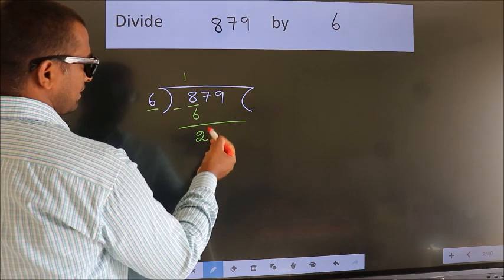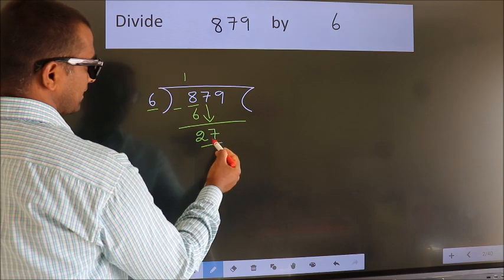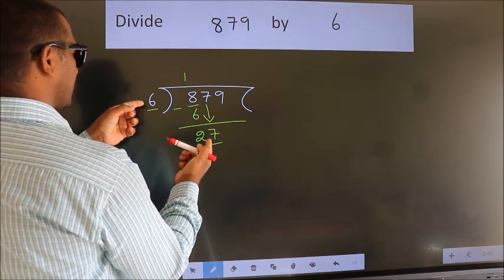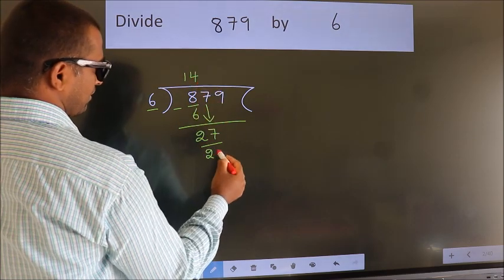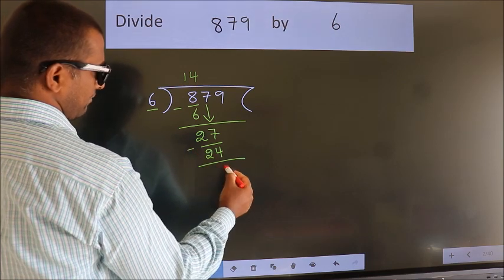After this, bring down the beside number. So 7 down. So 27. A number close to 27 in 6 table is 6 times 4 is 24. Now we subtract. We get 3.